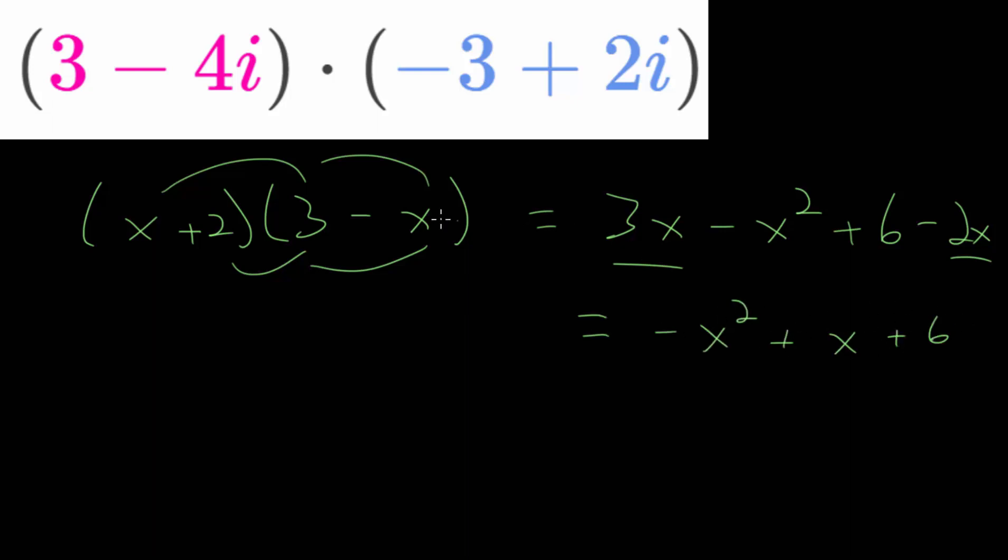So multiplying complex numbers works the exact same way. We will distribute the 3 to both of these terms and distribute the minus 4i to both of these terms. Now, where it gets a little bit complicated and different than multiplying real numbers is that we're involving the imaginary unit i, and remember that i is just defined as the square root of negative 1.